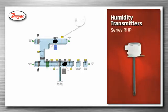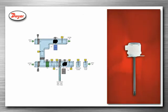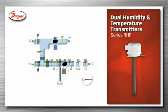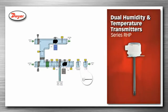Humidity transmitters, series RHP, are inserted into the duct and used to monitor the zone discharge humidity. Dual humidity and temperature transmitters, series RHP, are inserted into the duct and used to monitor the exhaust air humidity and temperature.